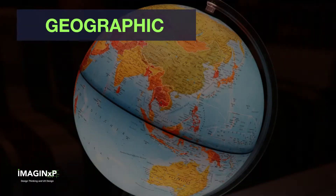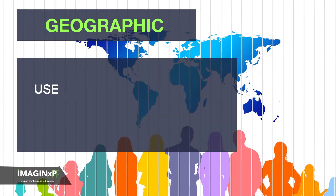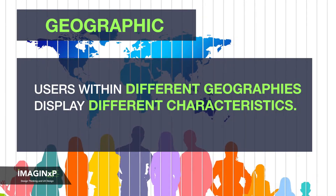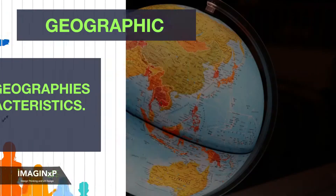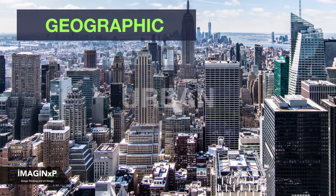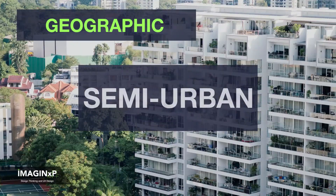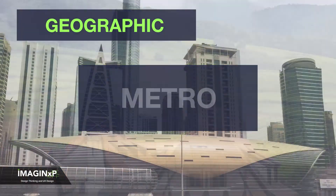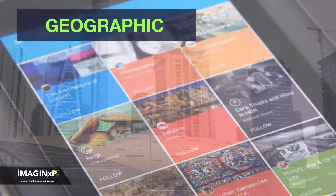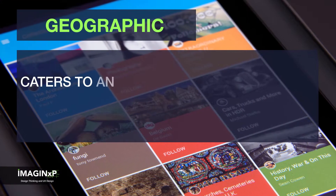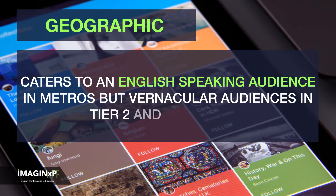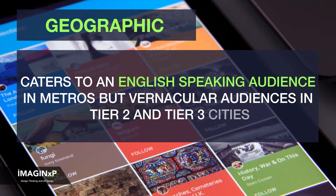Now let's move on to geography. User segments are also defined based on geographies, as users within different geographies display different characteristics. Geographical segmentation could be done on the basis of urban, semi-urban, and rural, or metros, Tier 1, and Tier 2 classifications. Think of news apps which cater to an English-speaking audience in metros but vernacular audiences in Tier 2 and Tier 3 cities.